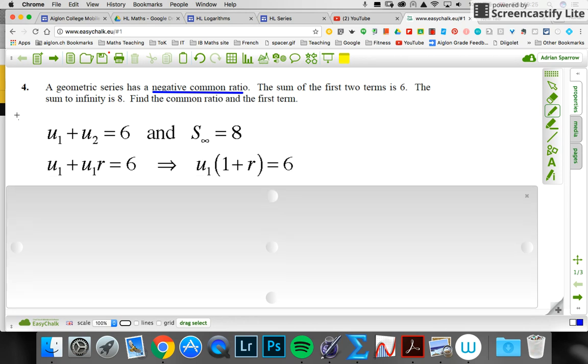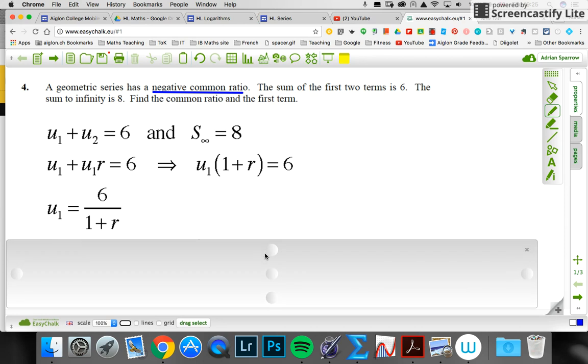Here's the sum of the first two terms. I've written as u₁ and u₁ times r, so that's the second term there. This can be factorized, and I can now make u₁ equals six divided by one plus r.